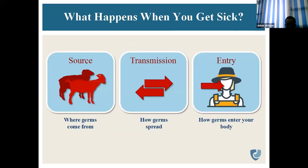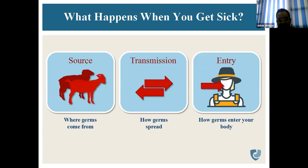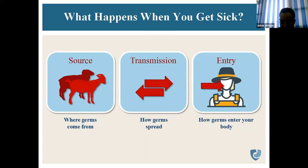First of all, there should be a source — that is, animals from where the zoonotic germs come. Then there should be transmission — those germs should get transmitted to the host. And there should be an entry point from where the germs enter the humans. We have three points where we can check zoonotic diseases: at source, during transmission, and during entry. These are the three blocking points.